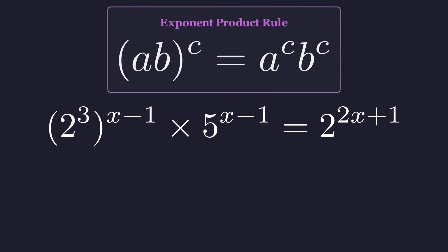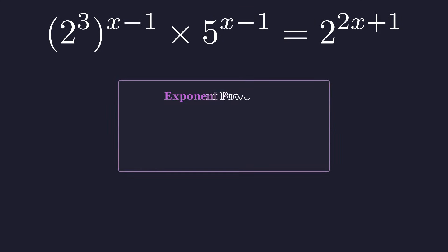This gives us 2 cubed to the power of x minus 1 times 5 to the power of x minus 1. Next, we apply the power rule for exponents, where we multiply the powers together.